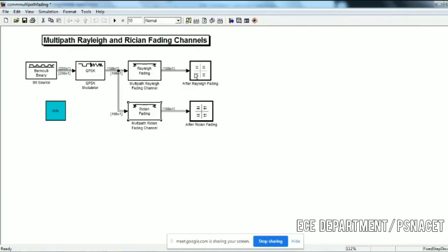Maybe Rayleigh is selected, and another path is Rician fading to understand the scatter plot after the Rayleigh faded or Rician faded signal.